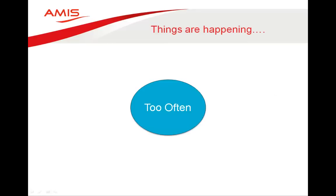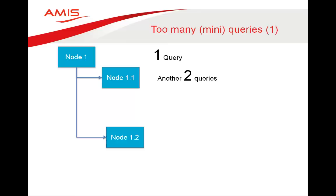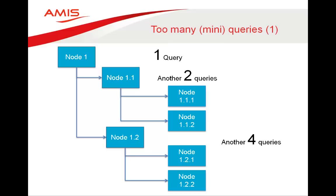That brings us to the next category: things that are happening too often. The first problem is too many mini-queries. This happens often in master-detail behavior in ADF. For example, with a page containing a tree, each node corresponds to one query. A root node is one query; two children produce two more queries; their children produce four more queries — so in total we already have seven mini-queries. This is not very efficient.